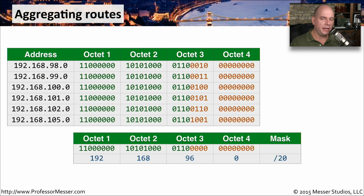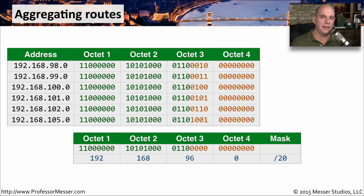Sometimes you have to calculate this aggregation yourself and configure your router manually. But a number of routers and operating systems are able to aggregate these routes automatically. So you may request a list of all the routes that a device knows about, but it gives you a summarized view to minimize the number of entries in its routing table.